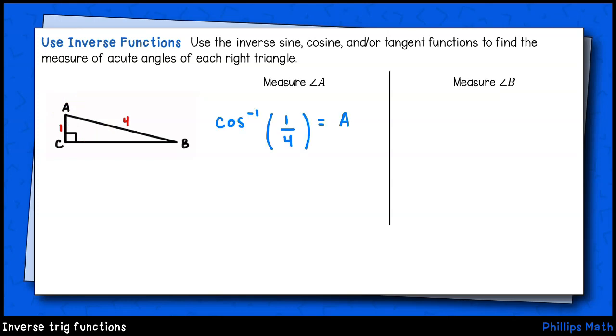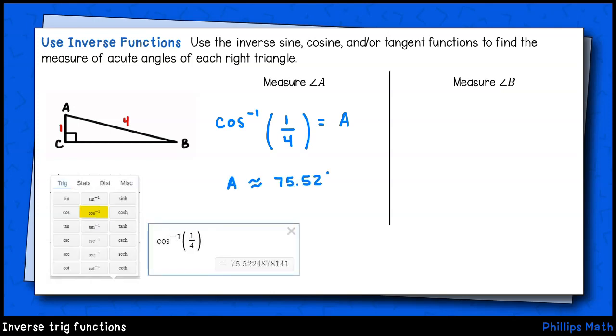To set this up, we have the inverse cosine of one fourth equals the measure of angle A. Using our calculator set to degrees, we'll tap in the inverse cosine of one over four and we get approximately seventy five point five two degrees.